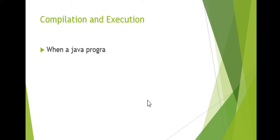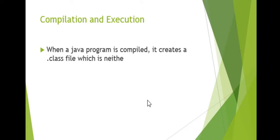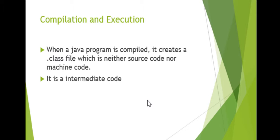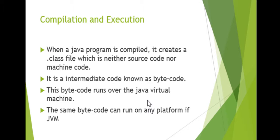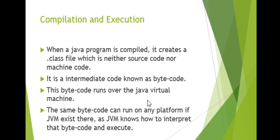When a Java program is compiled, it creates a .class file which is neither source code nor machine code — it is an intermediate code known as bytecode. This bytecode runs on the Java Virtual Machine. The same bytecode can run on any platform where a JVM exists, as the JVM knows how to interpret and execute that bytecode.